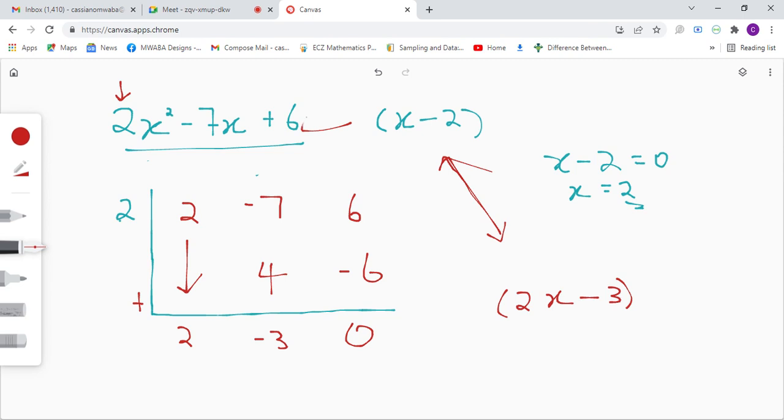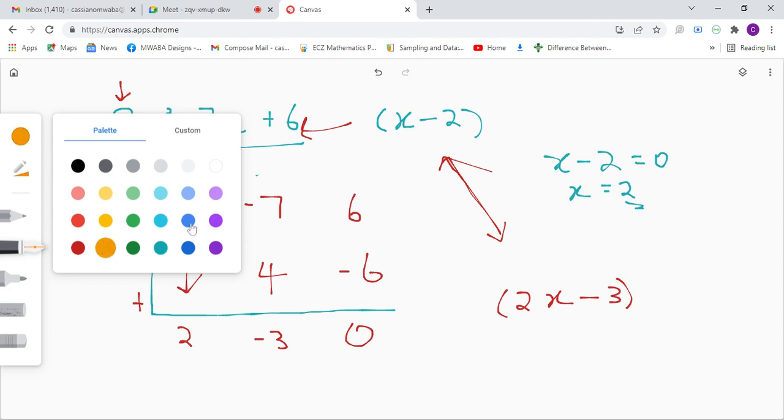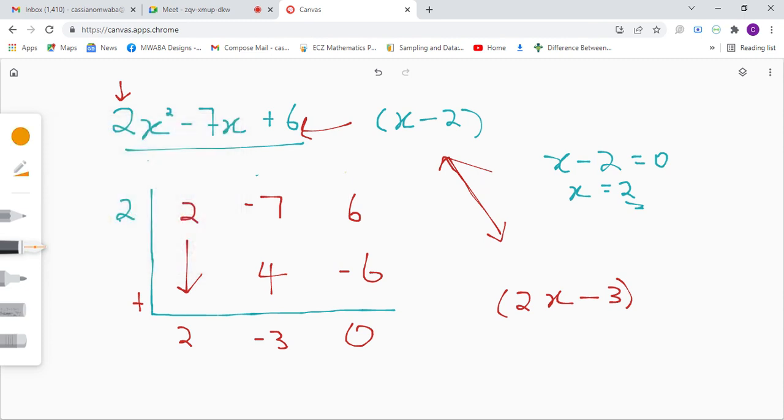So always what you have to remember is the last column is for the remainder. We didn't have a remainder - it's zero. This column is for the constant, and our constant is negative 3 here. And the first column is for our coefficient.